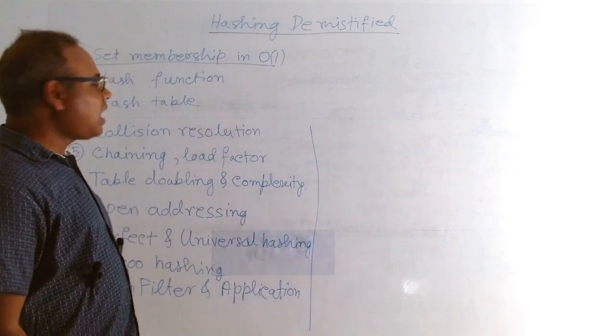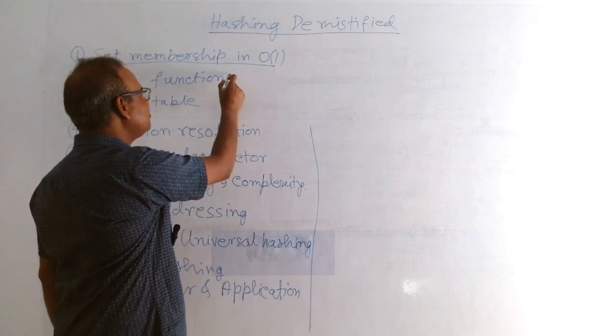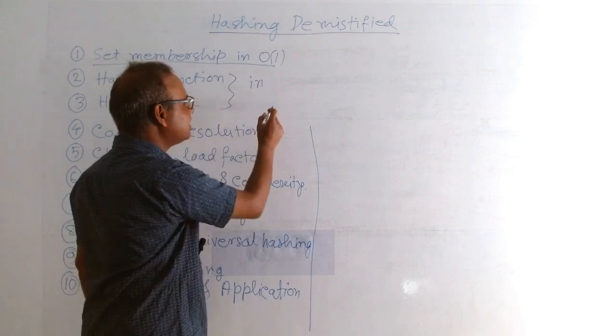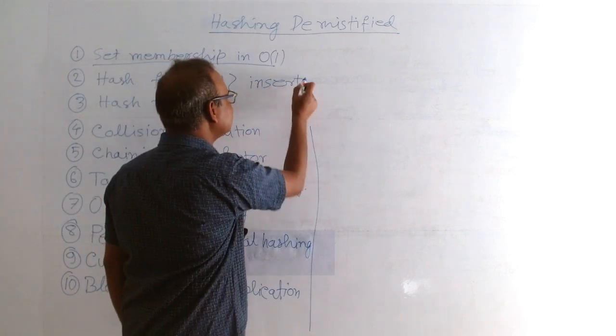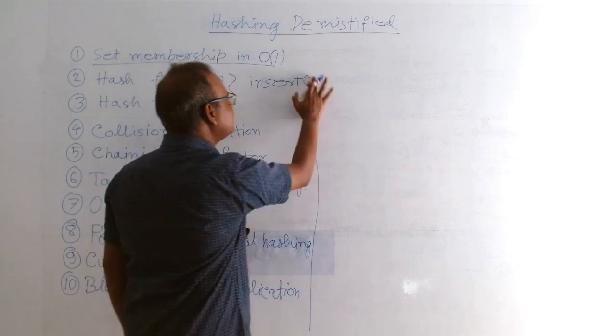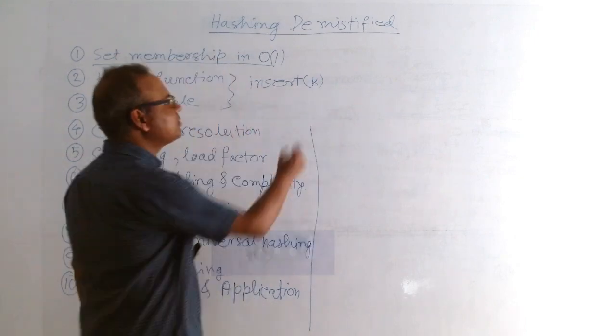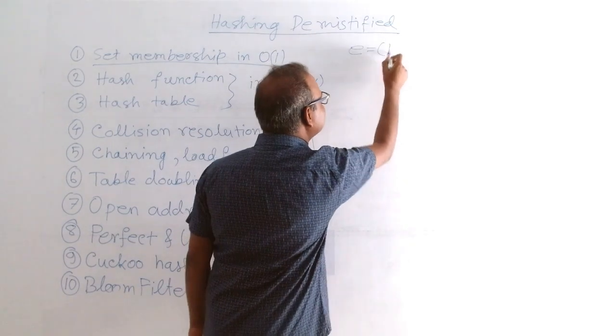Now, how will we do this membership operation? We have to work on insert. There are three elements: insert x, or generally we write key, because every element is a key-value pair.